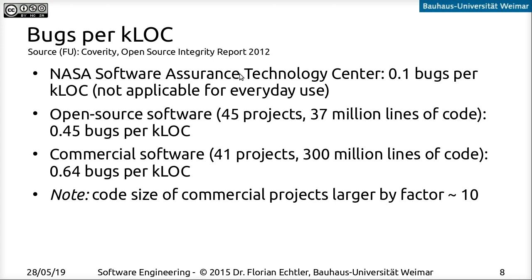Bugs per 1000 lines of code is an interesting metric for larger projects. A standout example is software built according to NASA guidelines — writing software for space applications is especially hard, and a bug can mean hundreds of millions of euros worth of spacecraft crash and burn. NASA development guidelines achieve something like 0.1 bugs per 1000 lines of code, but the development process is very strict and not something applicable to everyday projects.